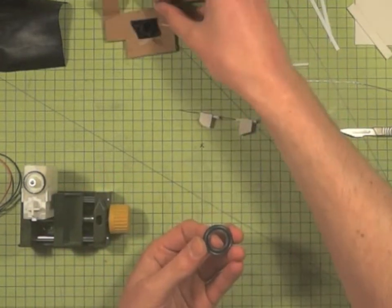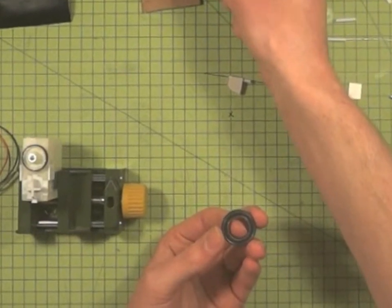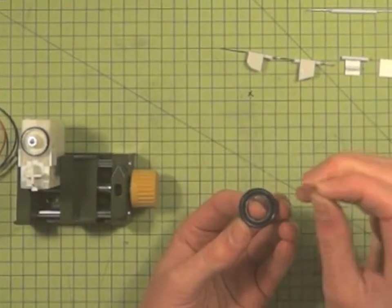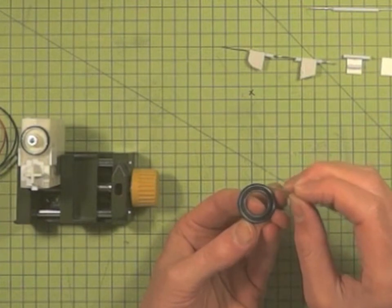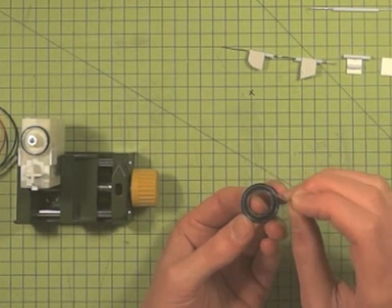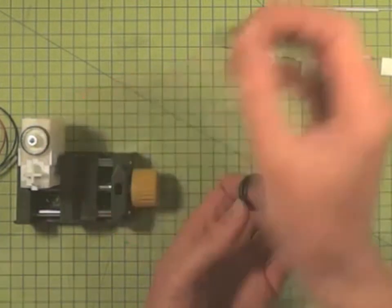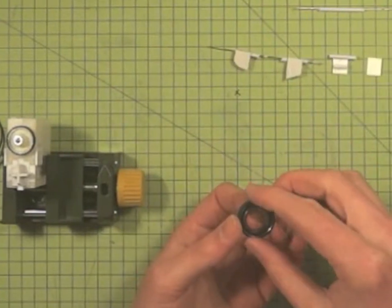And then the really fiddly bit comes by taking an old scalpel blade, dipping it in the superglue, and carefully feeding it in between the gap between the bearing and the bit of rubber. And the same will apply with that, and that will stop the rubber from slipping off.